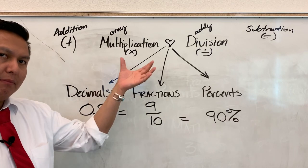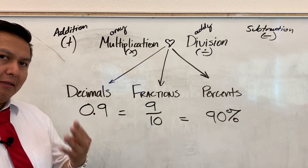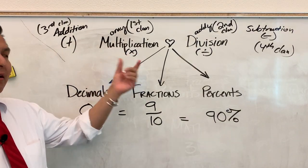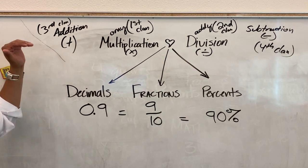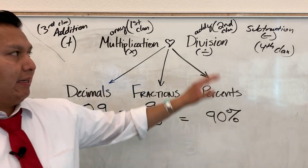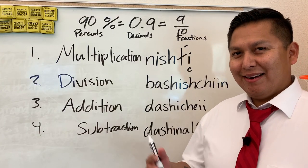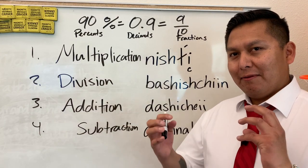Culturally, these four siblings with the same two parents have four clans. The mother's clan would be the first clan, father's clan the second clan. The maternal grandfather's clan would be addition, and the paternal grandfather's clan would be subtraction. So now as we tie in Navajo culture with the mathematics,